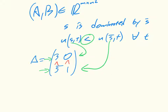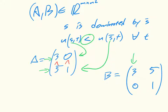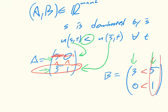For the column player, however, we have b equals [3, 5; 0, 1]. Because it's the column player, we're interested in strategies that correspond to columns, and we see that 5 is bigger than 3 and 1 is bigger than 0. So we can say that this row strategy dominates this row, and this column strategy dominates this column.